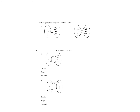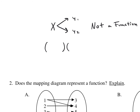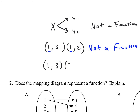This page is stuff from 2.1 — domain, range, and whether it's a function or not. If we have two arrows coming out of one x, is this a function? No — you can't have two arrows coming out of one x. If it's given in coordinate points and the x repeats — like (1,3) and (1,2) — is that a function? No. What if the y's repeat, like (1,3) and (2,3)? That is a function. Your y's can repeat; your x's cannot.